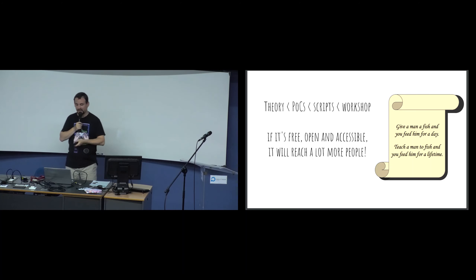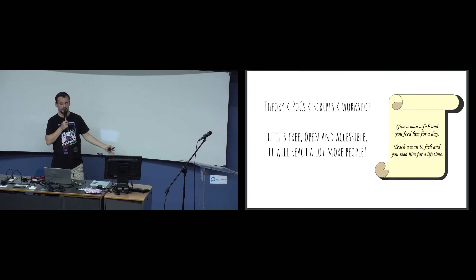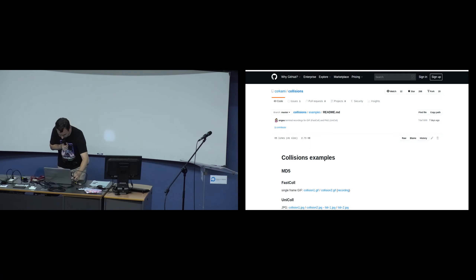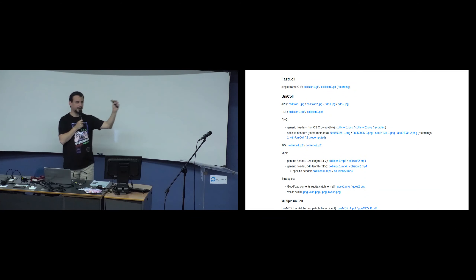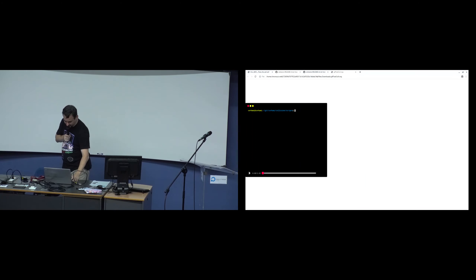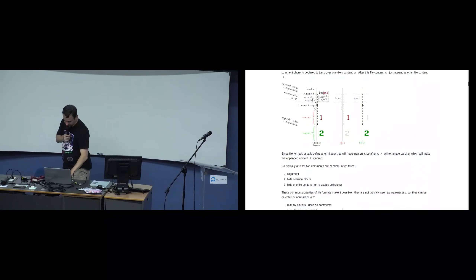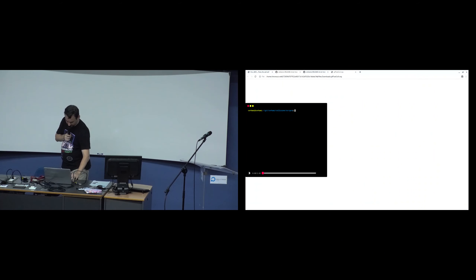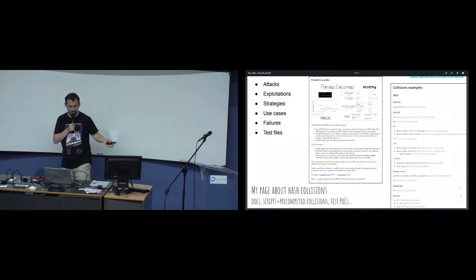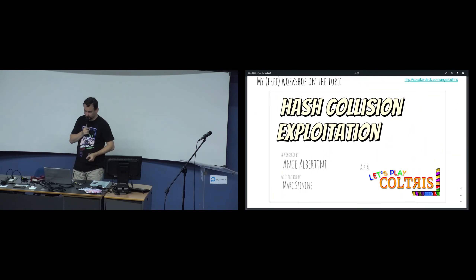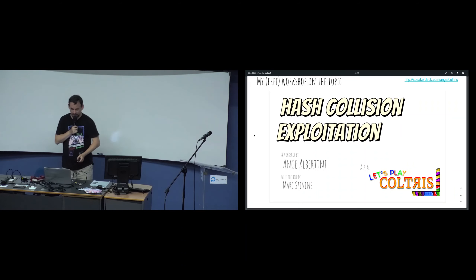I have a page that provides free proof-of-concept files so you can reuse them and show your colleagues, without needing to do anything yourself. Copyright-free, patent-free files you can reuse in your tests. I also have a page about hash collisions explaining all the tricks and how to create your own, with documentation, scripts, precomputed collisions, and free test proof-of-concept cases. And there is a workshop tomorrow on exploiting hash collisions.